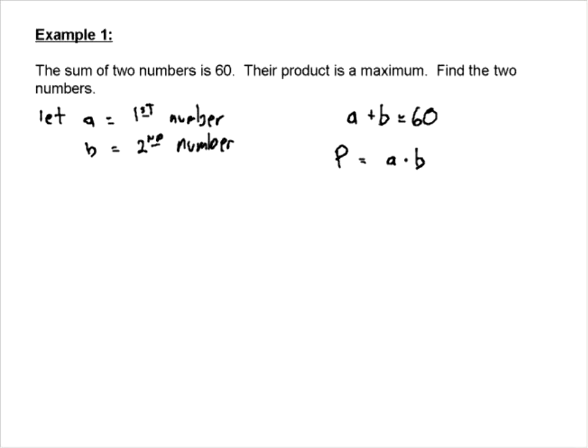So the first thing I'm going to do is I'm going to take this equation and I'm going to solve it for, let's solve it for B, it doesn't really matter which one. So of course we'll just move A to the other side so B is going to equal 60 minus A. So now I'm going to take my product equation and everywhere there was a B I'm going to replace it with 60 minus A.